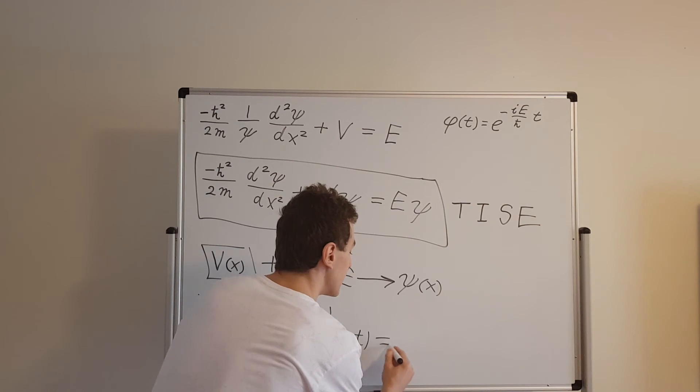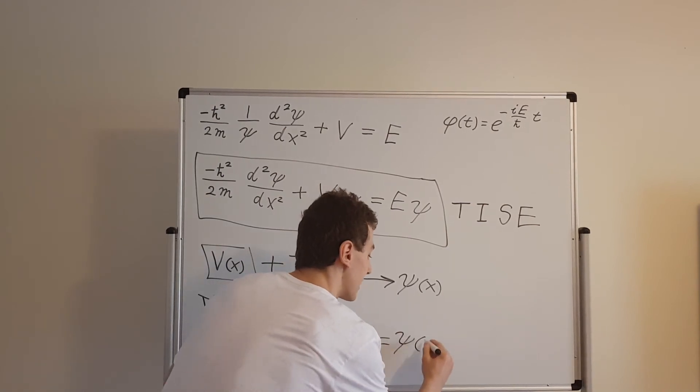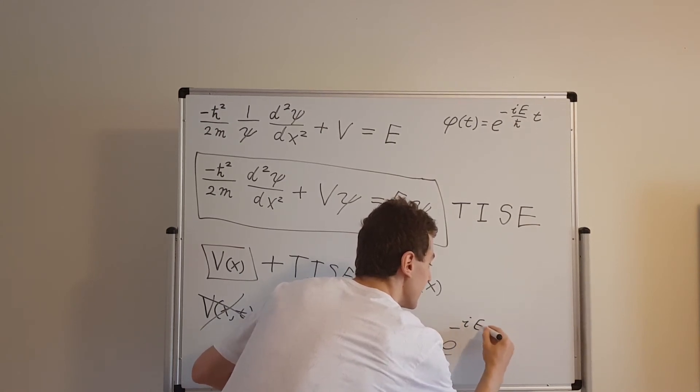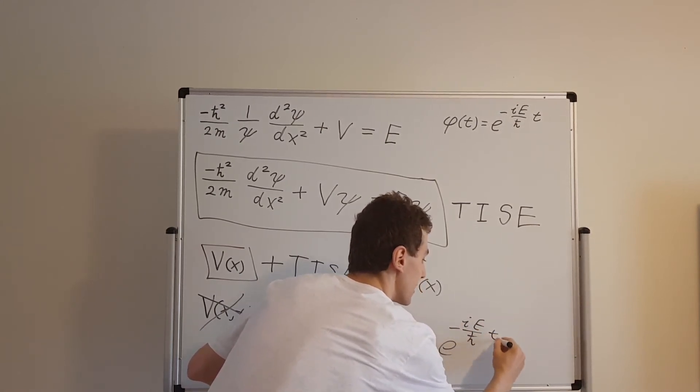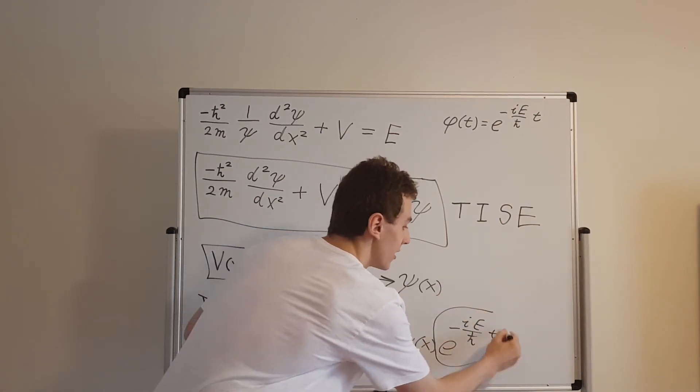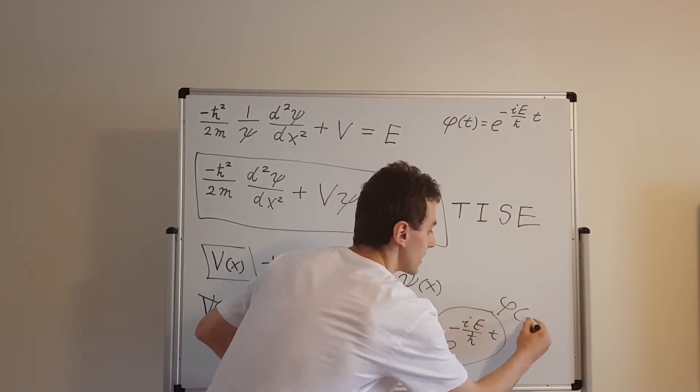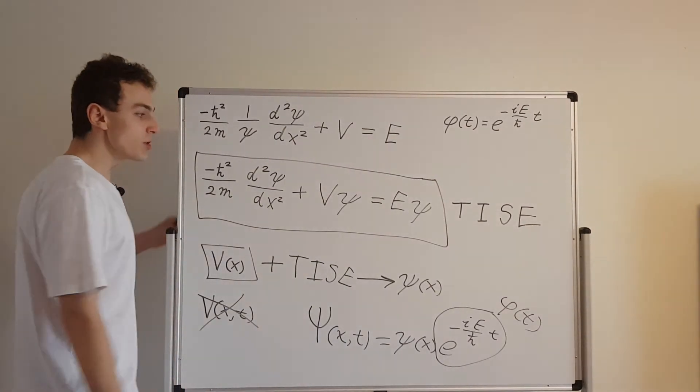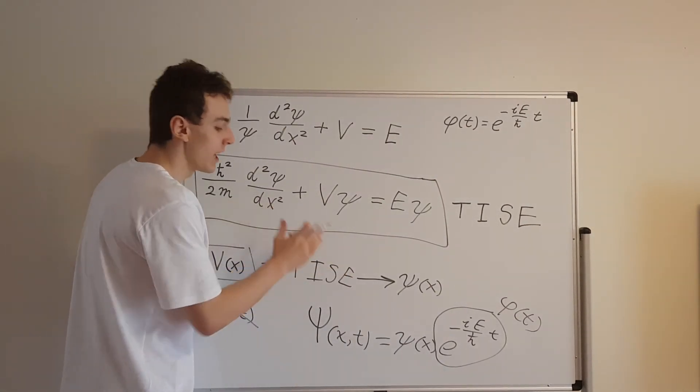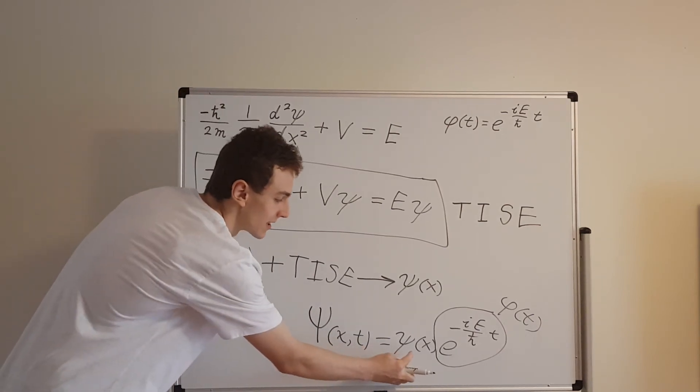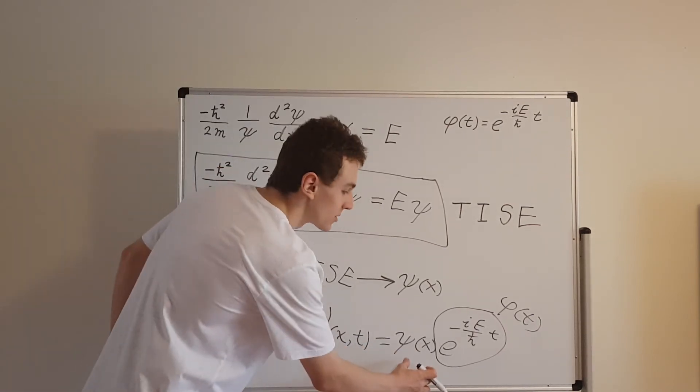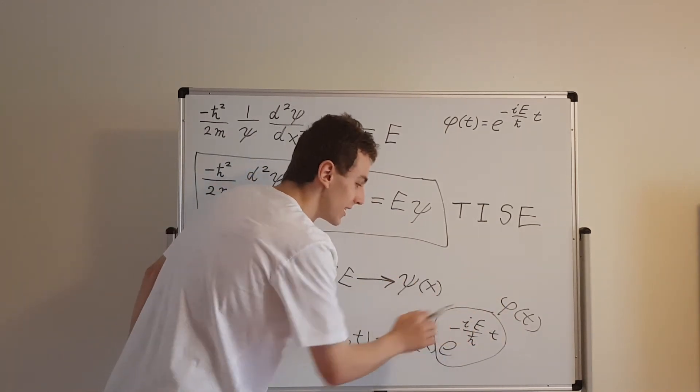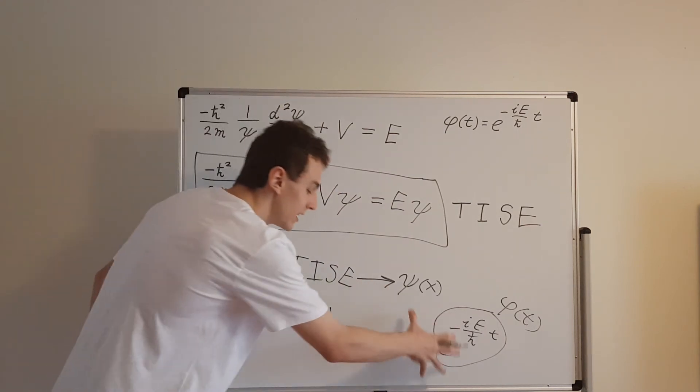And we can actually define it to be psi of x times e to the minus i E over h bar times t. Right, remember what this is, this guy over here is just phi of t. So that's what separation of variables allows us to do. Once we solve the time independent Schrödinger equation, that's going to give us all of these guys, the stationary states. And then what we have to do is multiply by this exponential factor with an imaginary constant in the exponent.